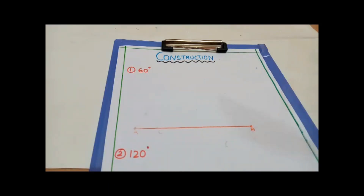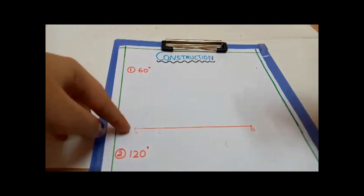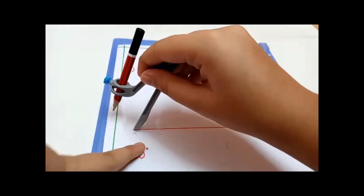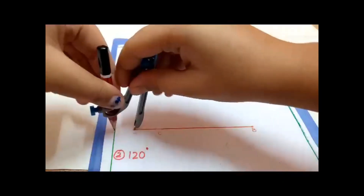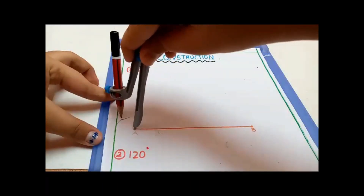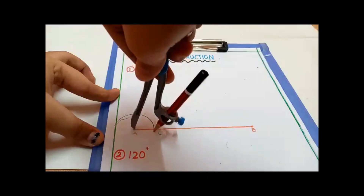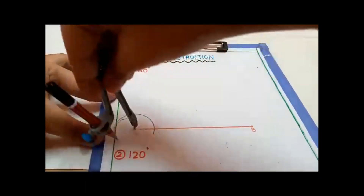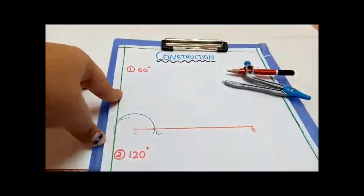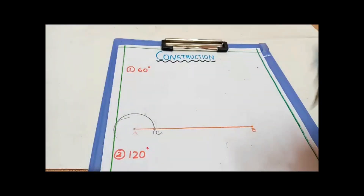For 60 degrees, first we draw a line AB. From point A, take a compass of any radius and put the pointer at A to draw an arc. Name this point as C.